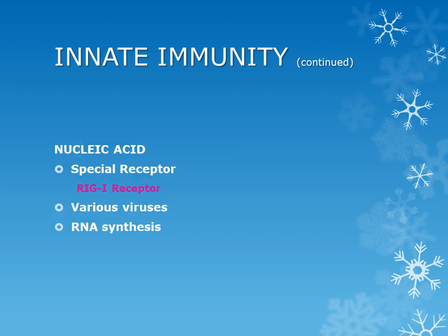The next important example of pattern recognition is nucleic acid. Nucleic acids of various viruses — for example, paramyxovirus and orthomyxovirus — are recognized by a special type of receptor located inside the cells called RIG-I helicase receptors.